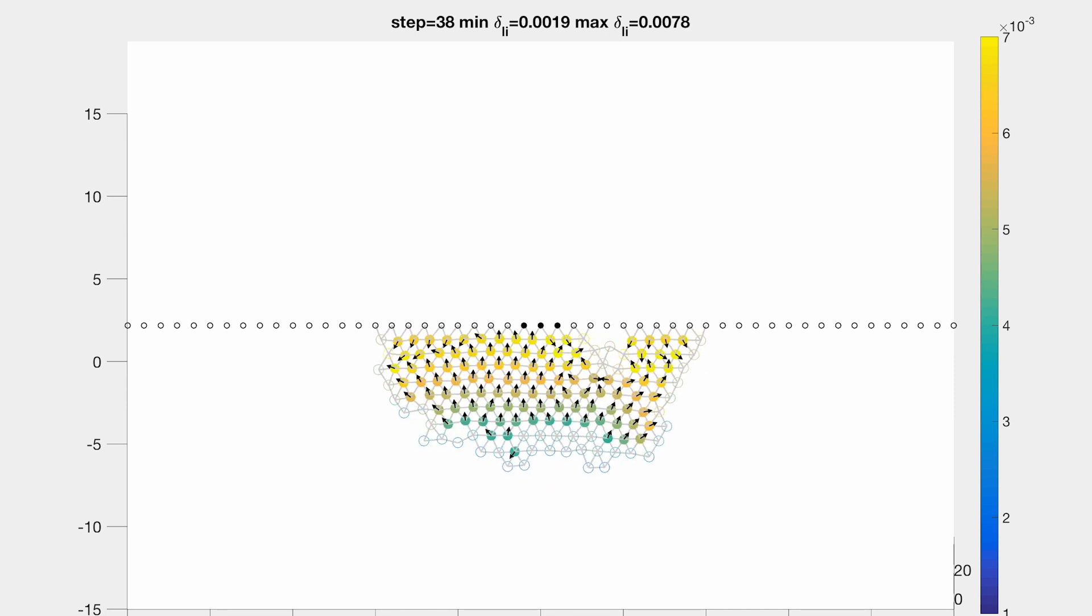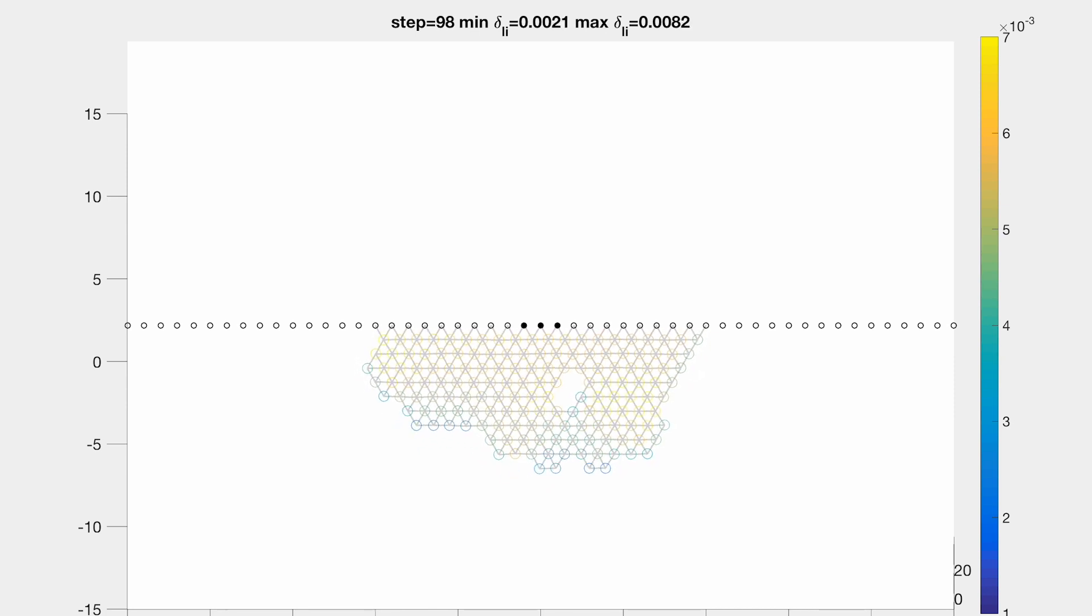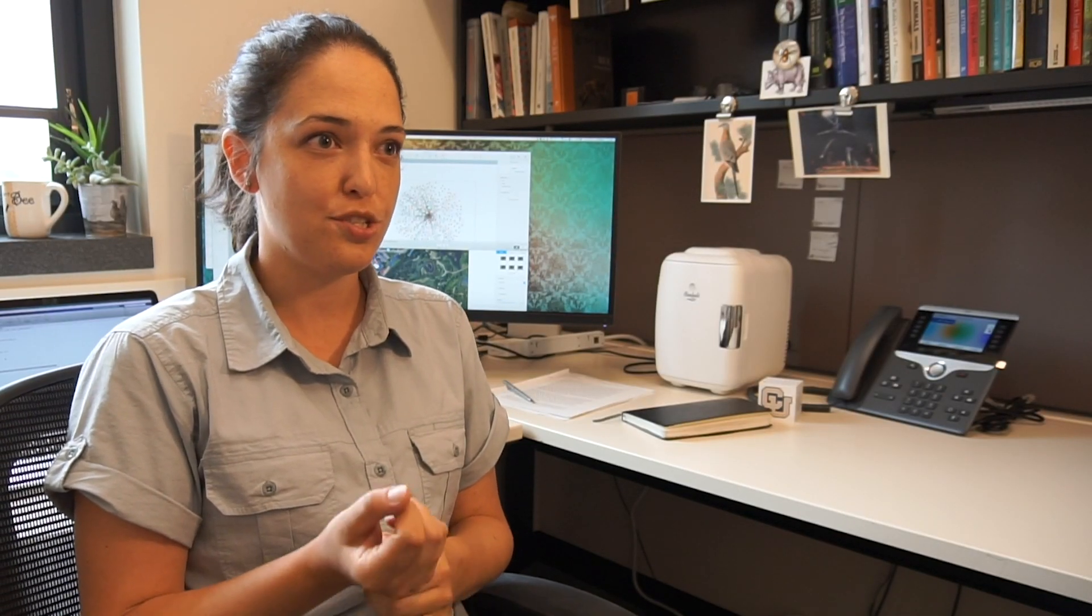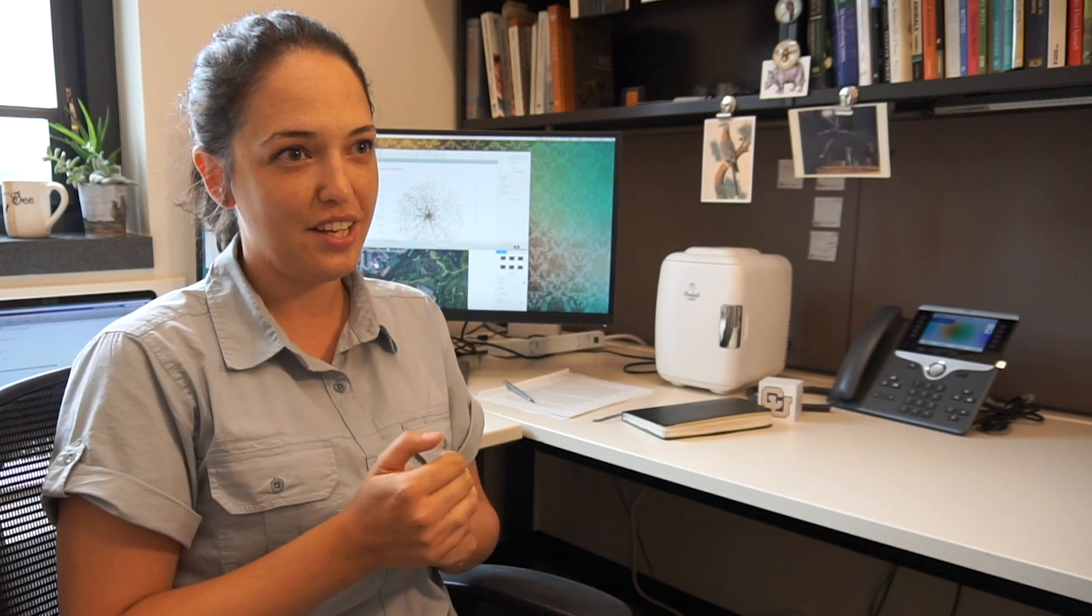And by doing this systematically under different conditions of perturbations that we apply—different frequencies, different accelerations, different directionality—we could pinpoint the local signal that they're using, which seems to be the local deformations each bee is sensing with connections to other bees.